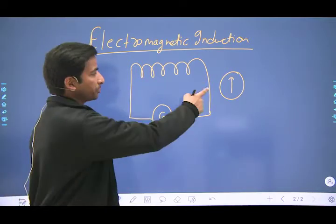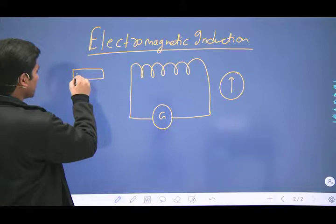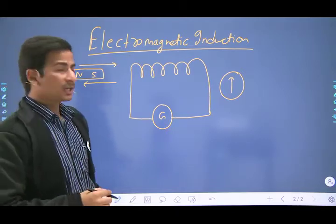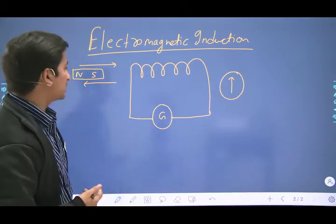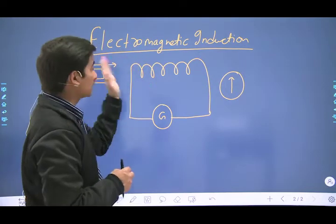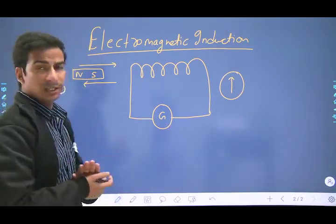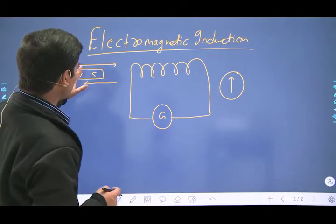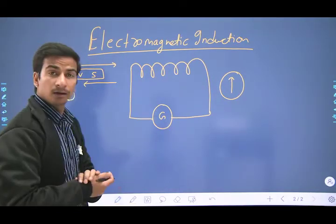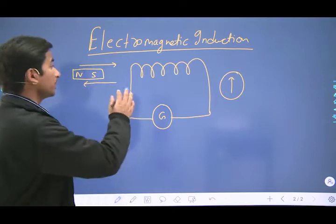You will get a momentary deflection produced in the galvanometer. Whenever the magnetic field lines crossing this coil are changing — either increasing or decreasing — you will get some induced current in the coil. Electromagnetic induction is the phenomenon in which changing the number of magnetic field lines passing through a coil produces a current and ultimately an induced EMF — an induced electromotive force — in this coil.